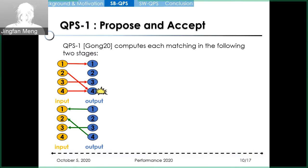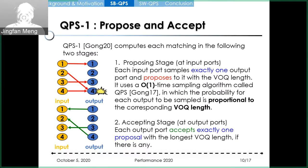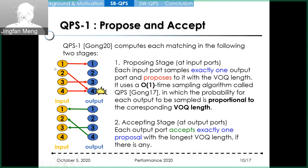QPS1 computes each matching in two stages: a proposing stage and an accepting stage. In the proposing stage, each input port proposes a randomly sampled output port. The probability that each output port is sampled by input 1 is proportional to the corresponding VOQ length at input 1. Using a QPS algorithm, this sampling can be performed in O(1) time. In the accepting stage, each output port accepts exactly one proposal with the longest VOQ length. Because multiple input ports may propose to the same output port, only one of these proposals can be accepted. So the throughput of QPS1 is far from optimal.